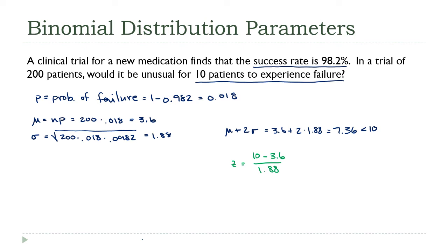I've got my calculator here: 10 minus 3.6 divided by 1.88, that is 3.40. That's greater than 2, which means 10 is more than two standard deviations above the mean, and we get the same conclusion. This is an unusual result.